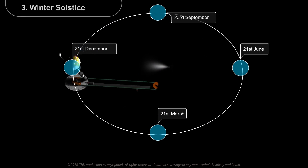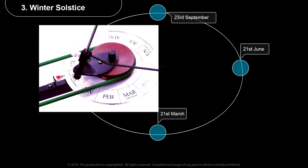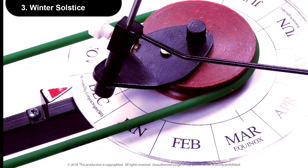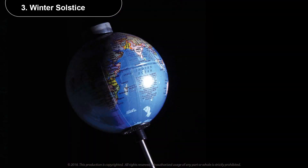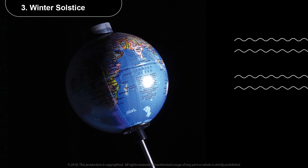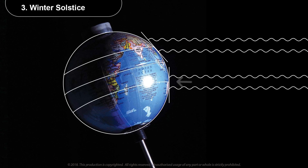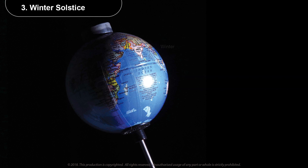The third position is winter solstice, corresponding to the 21st of December, as indicated by the pointer on the disc. At noon, the light from the lamp is falling normally at the Tropic of Capricorn, corresponding to a latitude of 23.5 degrees south, and as we go away from this latitude the light falls in an inclined manner. Therefore, the northern hemisphere experiences winter and the southern hemisphere experiences summer.